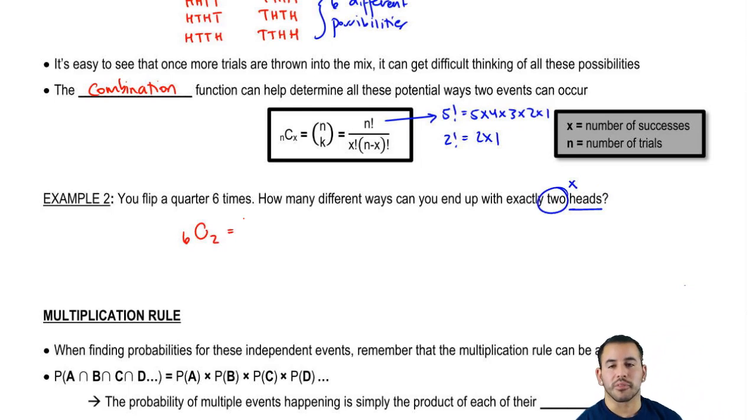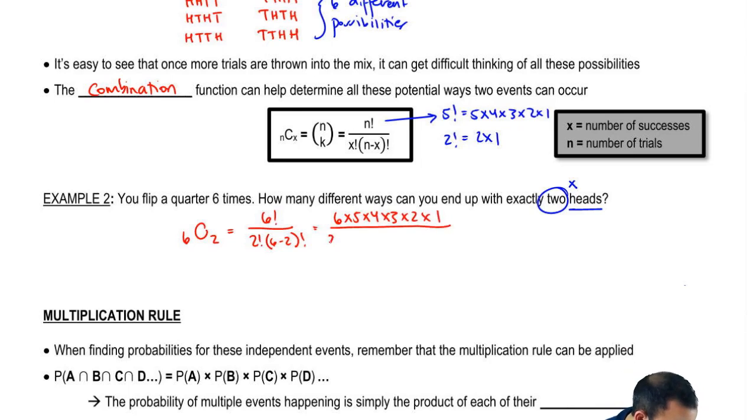And that breaks down simply into 6 factorial over 2 factorial times 6 minus 2 factorial. That's going to give us 4 on the bottom. So it's 6 times 5 times 4 times 3 times 2 times 1 divided by 2 times 1, and then this ends up being 4. So 4 factorial is 4 times 3 times 2 times 1.